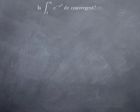Let's look at this example to start with. We want to know if the integral from 1 to infinity of e to the negative x squared dx is convergent. If we were to proceed as we have seen so far, we would have to write it as the limit as t goes to infinity of the integral from 1 to t of e to the negative x squared dx, and then try to calculate that integral.